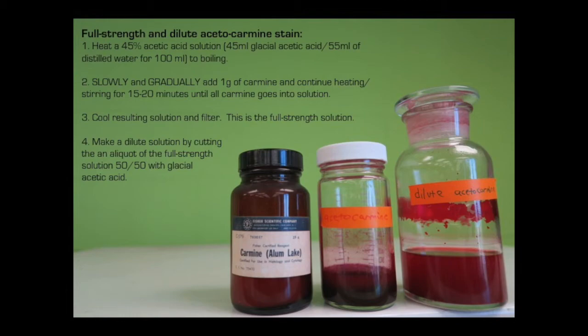We actually get carmine from scale insects, which is pretty cool — it's a natural dye. It's a solution of this in dilute acetic acid. So you have a concentrated version of that stain that you'll work with. I also make a dilute portion: usually what I do is cut the concentrated stain 50-50 with glacial acetic acid to make a dilute version of the stain.